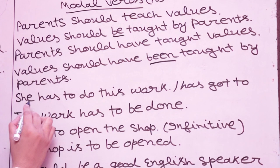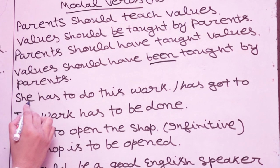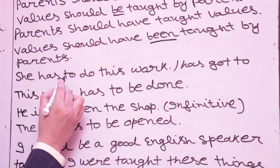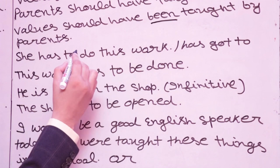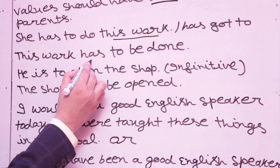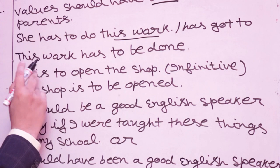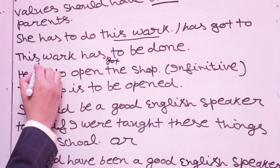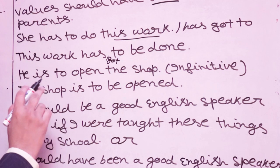'She has to do this work' → 'This work has to be done.' In British English: 'She has got to do this work' → 'This work has got to be done.' Both mean the same. 'He is to open the shop' — infinitive structure — passive: 'The shop is to be opened.' The rule is: modal/semi-modal + be + third form.